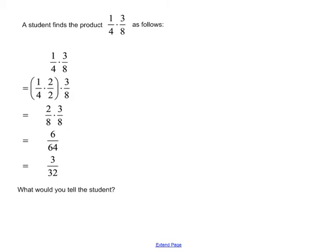A student finds the product one-fourth times three-eighths as follows. Here we're seeing the process that the student did to find that product. We're being asked to come up with something to tell the student, which makes me think that there's probably something going on here that maybe the student shouldn't be doing.